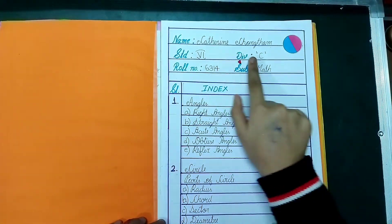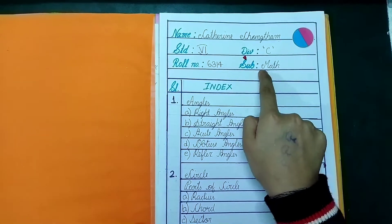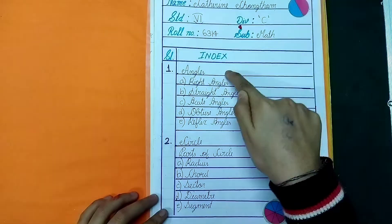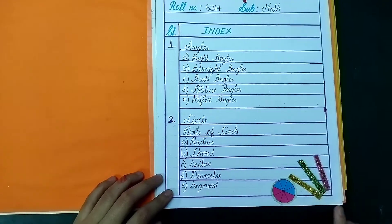Here is the name, standard, division, rule number and subject. Here is the index: angles, types of angles, circle, parts of circle.